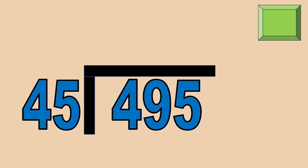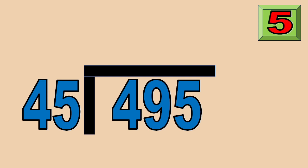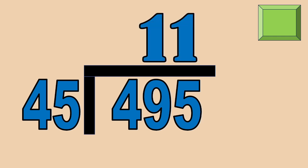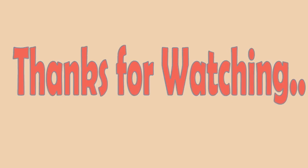495 divided by 45. The answer is 11. That's all for now. I hope you enjoyed learning about dividing 3-digit by 2-digit numbers. Thanks for watching.